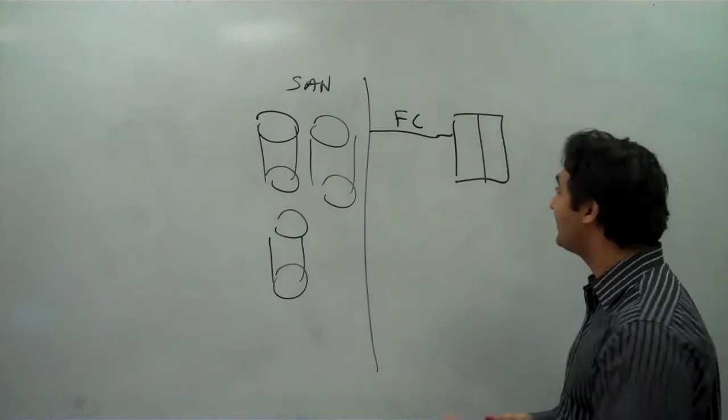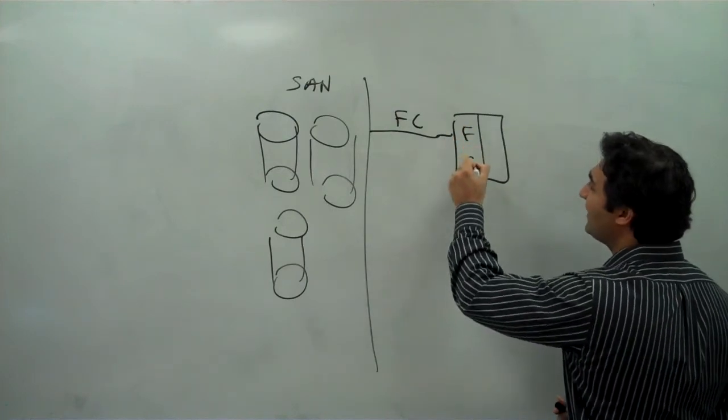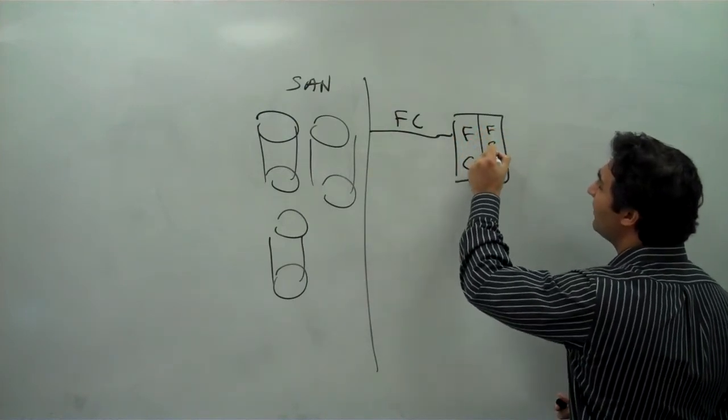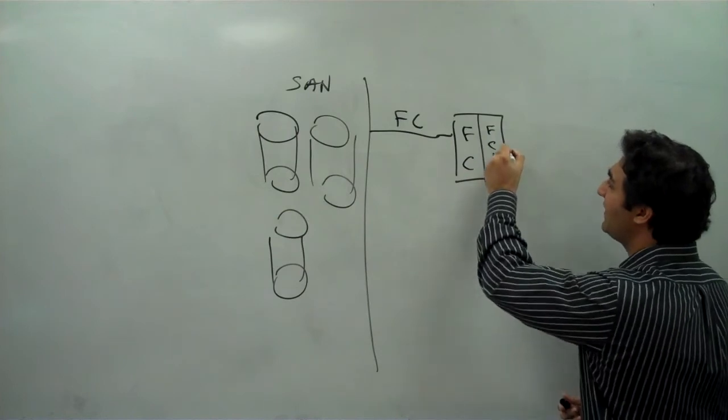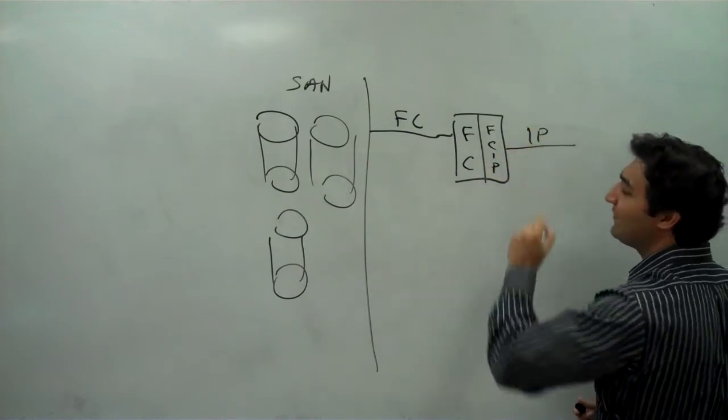Essentially, the SAN extension devices speak fiber channel on one side and fiber channel over IP on the other side and produce IP traffic.